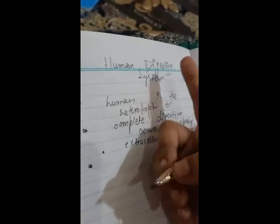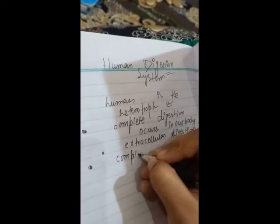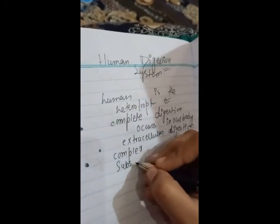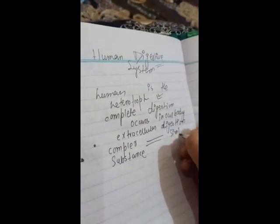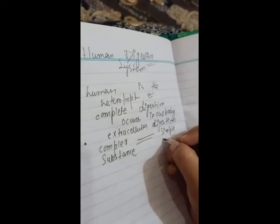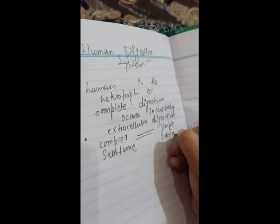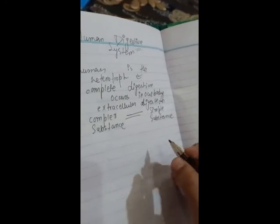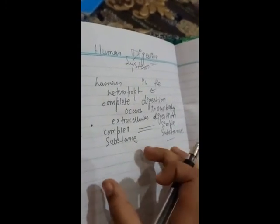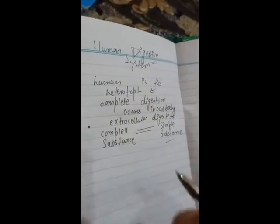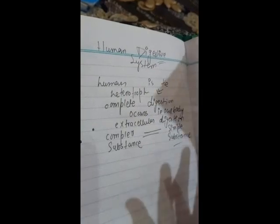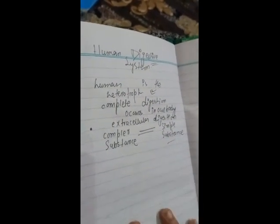The definition of digestion: the complex, indiffusible, or insoluble substances that we eat are first converted into simple, soluble, or diffusible substances, from which we can easily get energy after they diffuse into the blood or other organs. Digestion means complex substances are broken down in many organs and converted into simple substances. There are many steps in digestion.